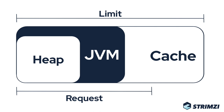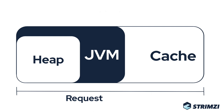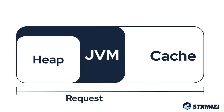Since a big part of Kafka performance relies on the page cache, which caches the data written to disk, you should at least consider requesting the memory for the page cache as well. In most cases, you want stable and predictable performance from your production Kafka clusters, and that's why requesting the cache memory as well makes a lot of sense.